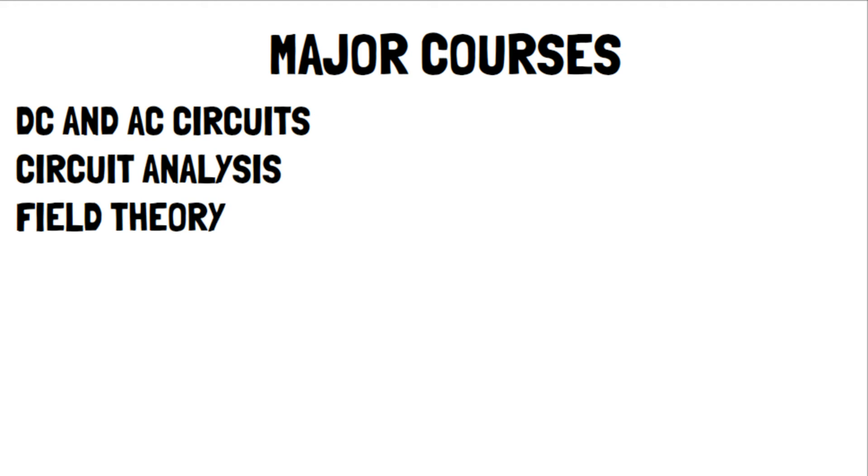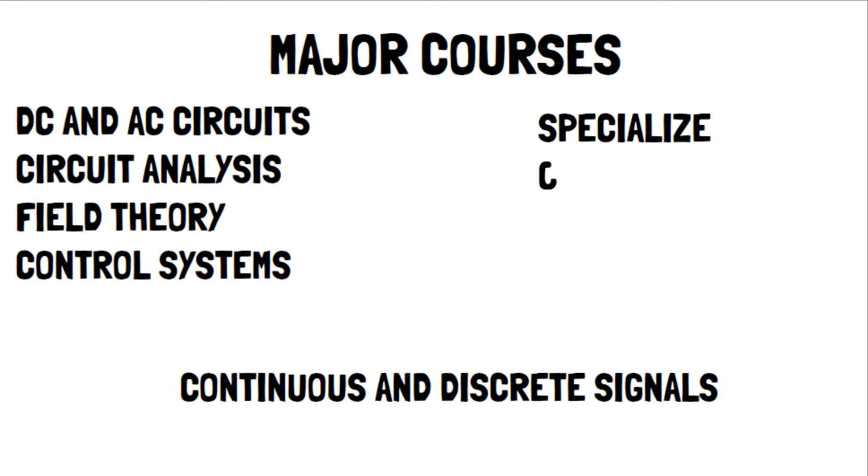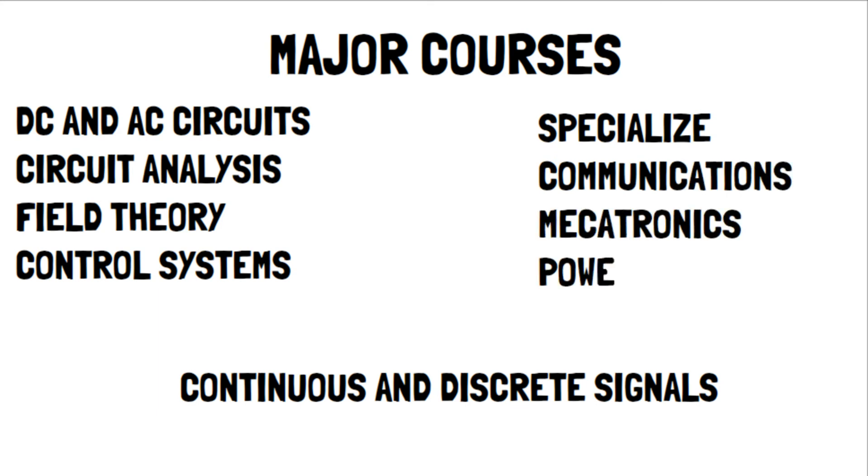As for EE classes, you'll be doing things like DC and AC circuit theory, circuit analysis, field theory, control systems, as well as courses in continuous and discrete signals and systems. Depending on the school you go to, you will have the option of specializing, which is to say you'll do concentrations such as communication systems, mechatronics or power electronics to name a few.